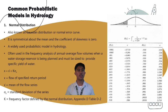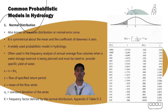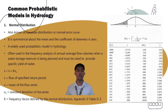Common probabilistic models in hydrology. The normal distribution (Gaussian distribution) is symmetrical about the mean with a coefficient of skewness of zero. It is widely used in frequency analysis of annual average flow volumes when a water storage reservoir is being planned. The equation uses x (flow of specified return period), x-bar (mean of flow series), sigma-sub-x (standard deviation), and k (frequency factor from the normal distribution, found in Table D-2).